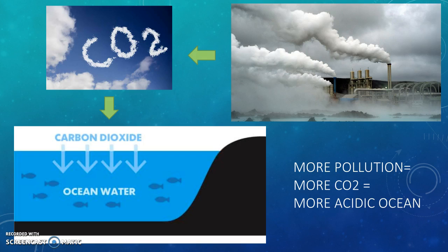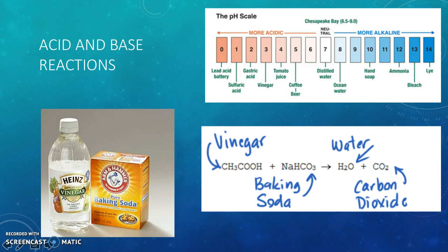To understand this chemistry, let's recall the basics of acids and bases. Recall the pH scale, a scale used to measure the amount of hydrogen ions in a solution. Acids have a pH of below 7 and have a higher amount of hydrogen ions. Bases have a pH above 7 and have a higher amount of hydroxide ions.